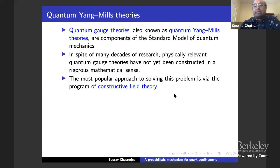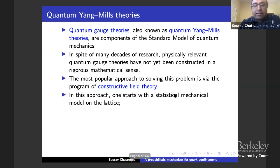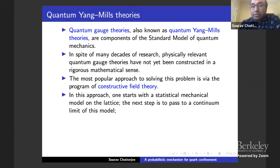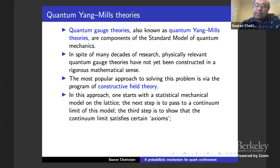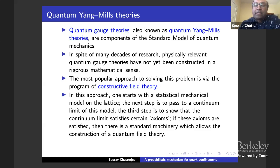The most popular approach to solving this question is the program of constructive field theory, which was very active in the 60s, 70s, and 80s, and is still active. In this approach, one starts with a statistical mechanics model on the lattice. The next step is to pass to a continuum limit of this model. A third step is to show that this continuum limit satisfies certain axioms — basically a bunch of properties they have to satisfy, such as reflection positivity and a whole bunch of other things.